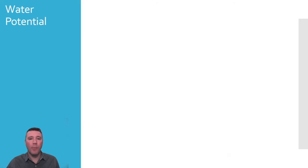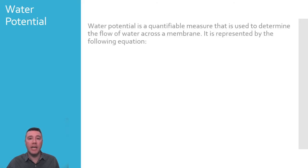Water potential, represented by the Greek letter psi in the equation below, is used to determine the direction of the net movement of water across a membrane. Water always travels from an area of high water potential to an area of low water potential across a membrane. There are many variables that determine the water potential of a solution, but for our purposes, we will focus on these two.